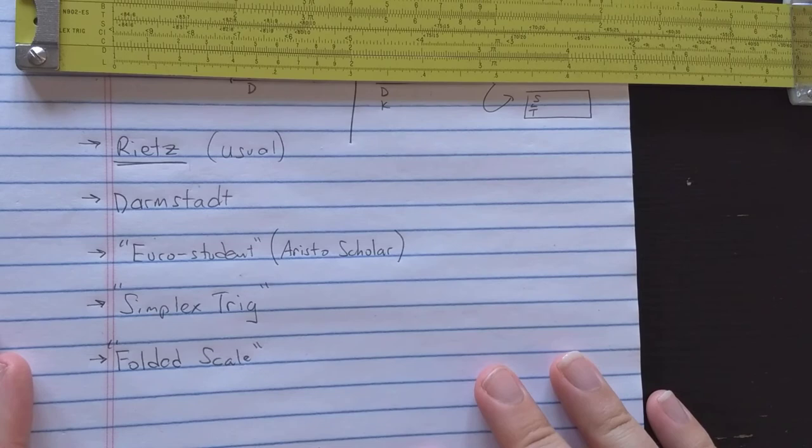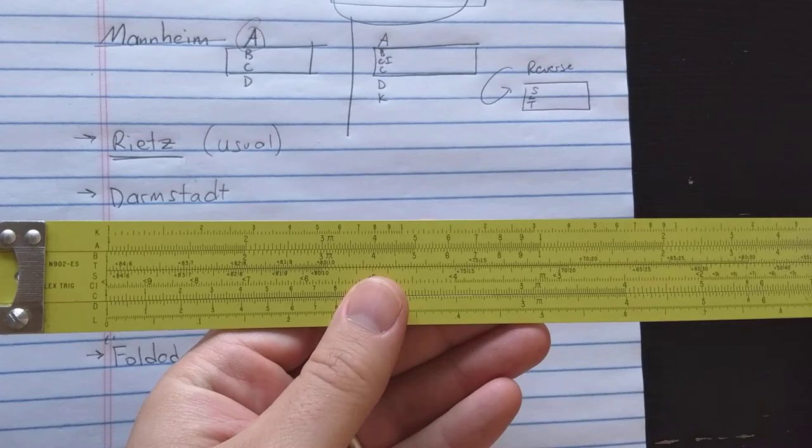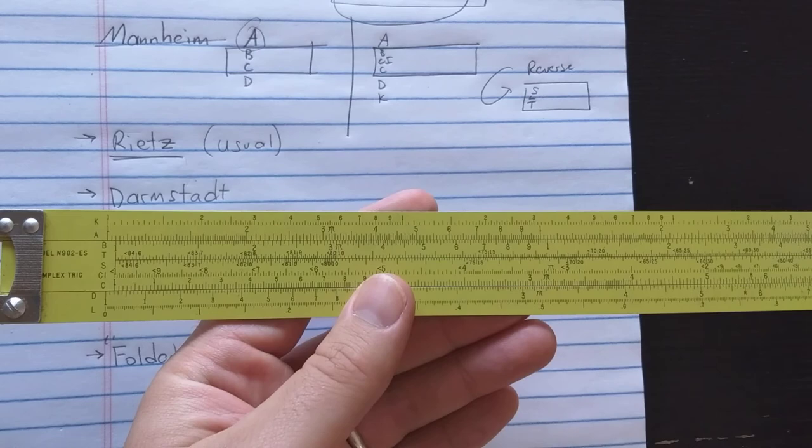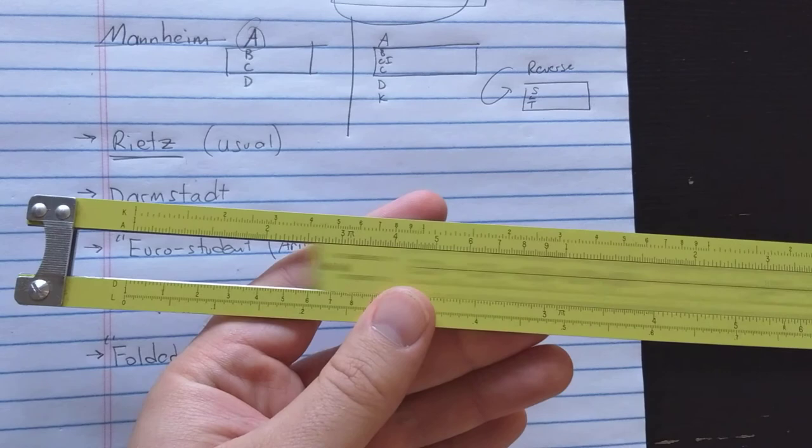I think that about rounds up the non-duplex scale set round up. Tell me what's your favorite scale set out of these. I'd have to say that mine is really the Rietz scale set, close runner up being this Pickett. And it might win if it wasn't metal construction or if maybe they had colored in the inverse scales with red, like on their more high-end slide rolls. So I'd say the Pickett slide roll and the Rietz slide roll are my favorite scale sets from the roundup. Let me know what you think. What's your favorite non-duplex scale set.